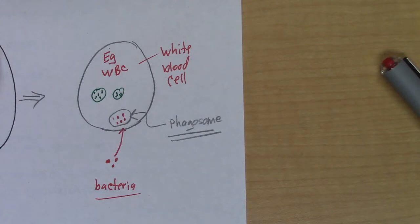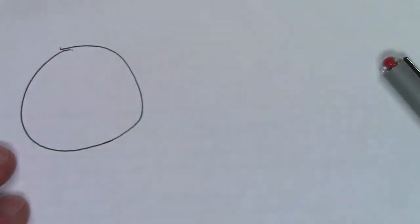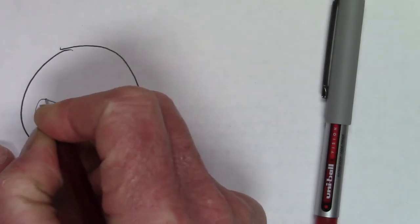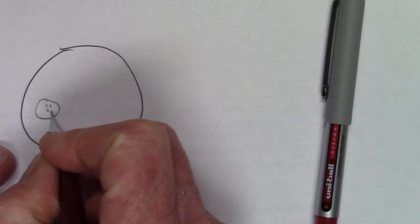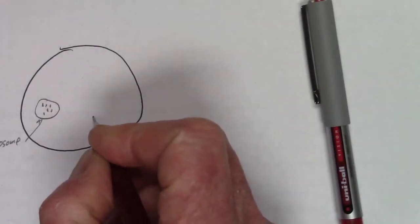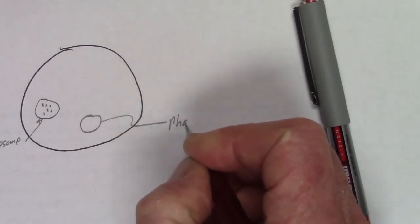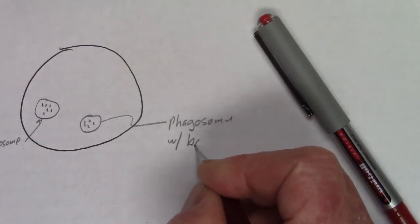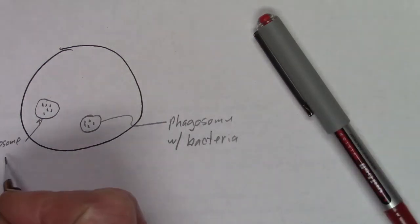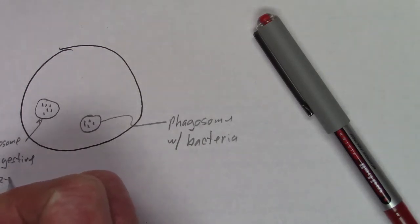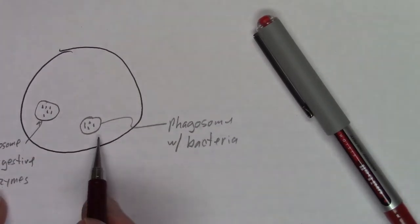To finish off this story, let's get the bacteria digested. Inside the cell we have a lysosome with digestive enzymes in it, and here is our phagosome — the lysosome with bacteria. What was in the lysosome were digestive enzymes, which are proteins, and we need to kill the bacteria.